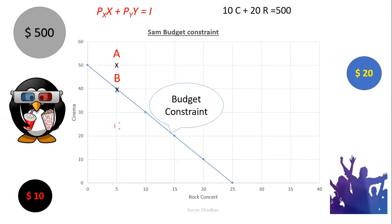Now if we consider point C. At point C, Sam goes 20 times to the cinema and 5 times to assist to the rock concert. So 20 times 10 is 200, and 5 times 20 is 100. So the total is 300. So here Sam, he can make this set of choices and he will save also 500 minus 300, it means $200.